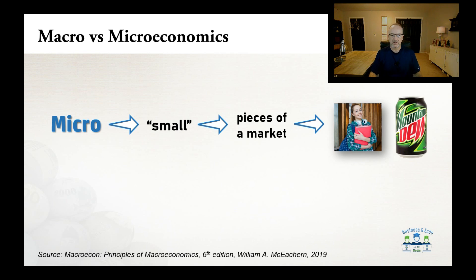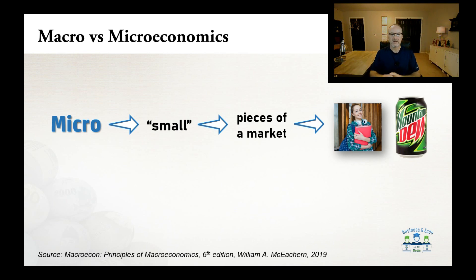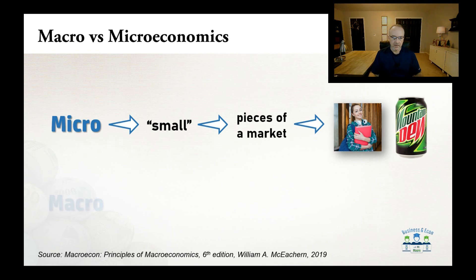A micro market is just an individual — a small piece of the full market, which is made up of all buyers and consumers. It also has to do with small pieces of the market, like the demand for Mountain Dew or sodas. A microeconomic market looks at a single market: how do we determine demand in this market, and how is that demand filled by suppliers?